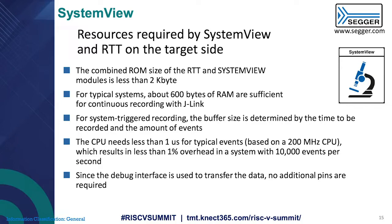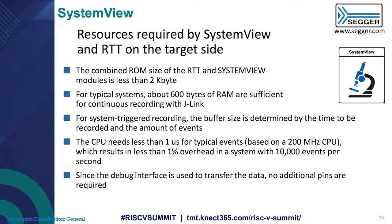In terms of resources needed on the target, it's actually not very much. For ROM or flash size, less than 2 kilobytes are required by RTT and SystemView combined. For RAM, it's about 600 bytes, so also not bad. In terms of real-time impact, there's about 1% overhead, which is acceptable for the amount of visualization you get. And since we're using the existing debug channel, no additional pins on the device are needed.